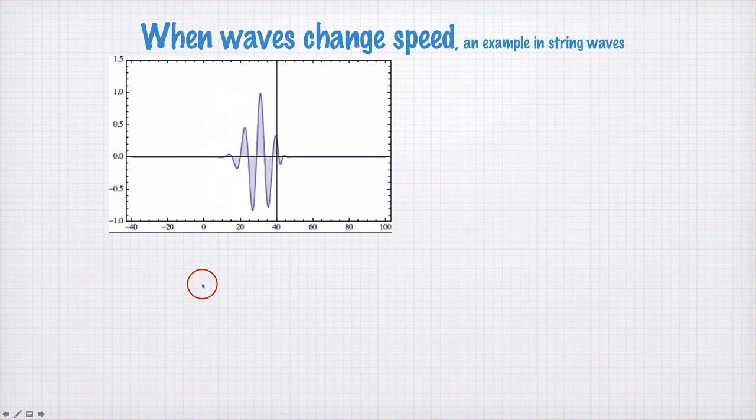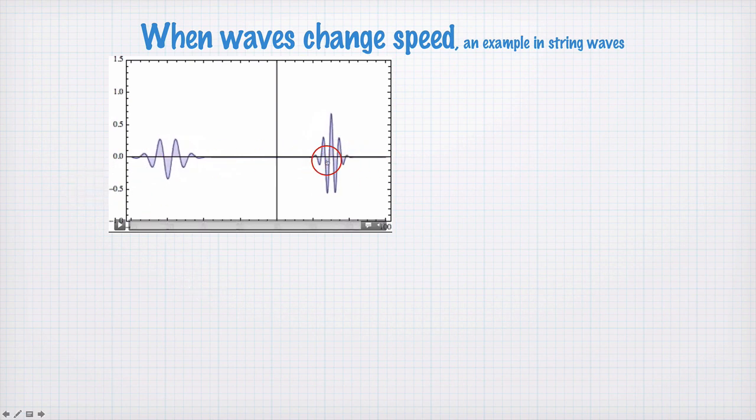So the wave travels along, and when it changes from one medium to another, we get some transmission and some reflection. We see that on this side, the wave has become shorter, so the wavelength is reduced.